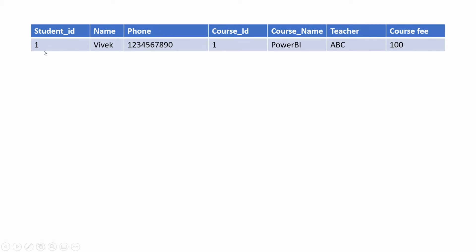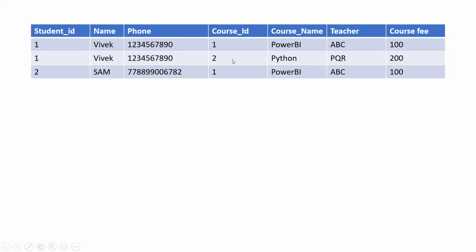Vivek, who has student ID 1, has registered for the course Power BI, which is taught by teacher ABC and has a course fee of 100. The course ID for Power BI is 1. Vivek has enrolled for another course, Python, taught by PQR with course ID 2. Course ID 1 is Power BI taught by ABC, course ID 2 is Python taught by PQR, and course ID 3 is R taught by XYZ.